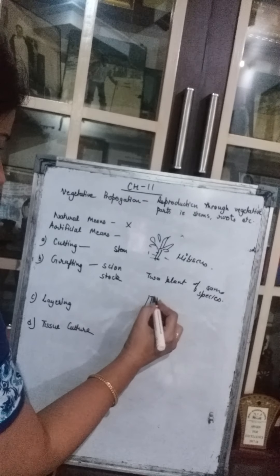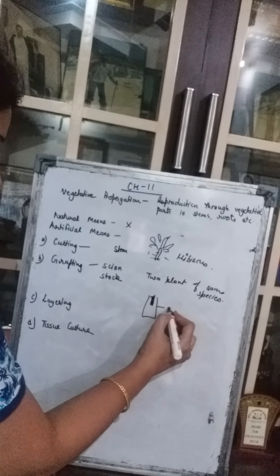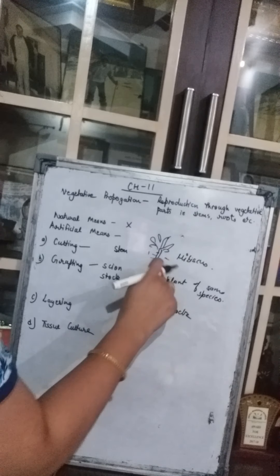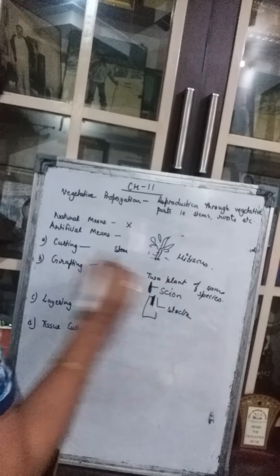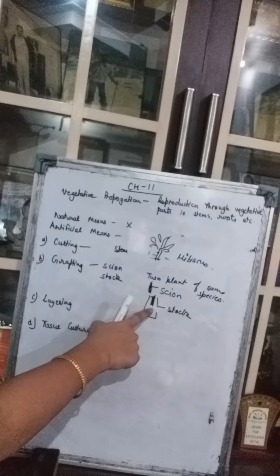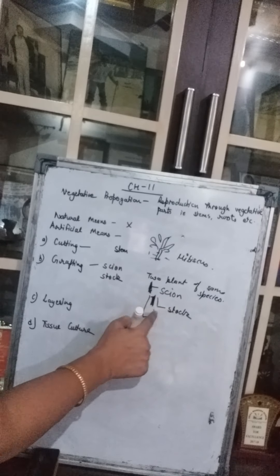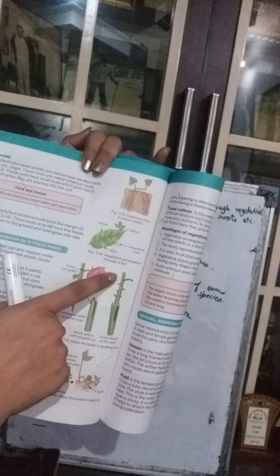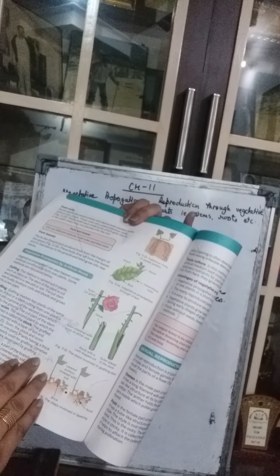The second plant, into which the scion is inserted, is called the stock. So the scion is inserted into the stock. As you can see in the figure, the scion has been inserted into the stock. The grafted area is then covered with soil, water is added, manure is added, and slowly it develops into a new plant.